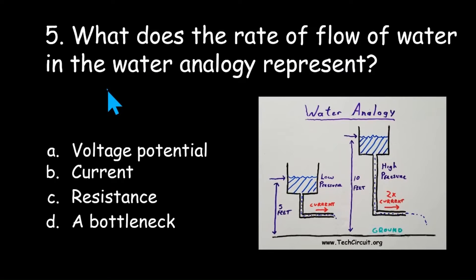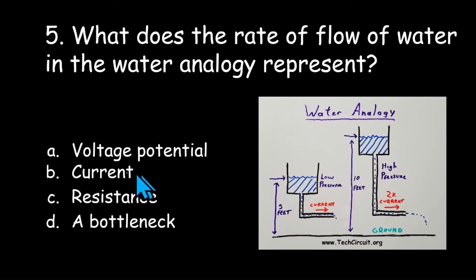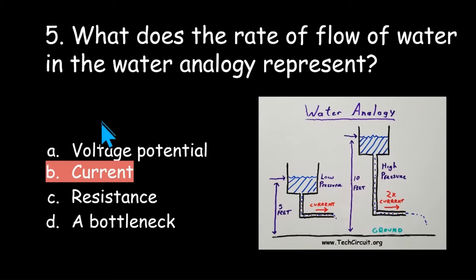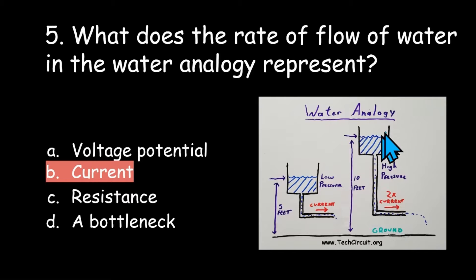What does the rate of flow of water in the water analogy represent? The options are voltage potential, current, resistance, or a bottleneck. The answer is current. The increased pressure of the water causes the water to flow quicker, which is true with electricity — the higher the voltage, the more current flows through a wire.